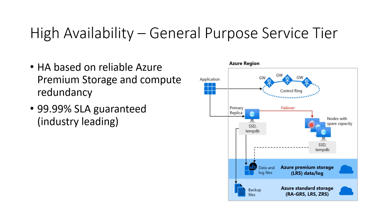The resiliency and high availability in the General Purpose service tier is provided through the underlying Azure blob storage data redundancy and high availability features. Essentially, the blob storage guarantees that every record in the log file or every page in the data file will be preserved even if the SQL Server process crashes. This provides a 99.99% SLA guarantee, which is leading amongst all cloud providers for SQL Server database services.